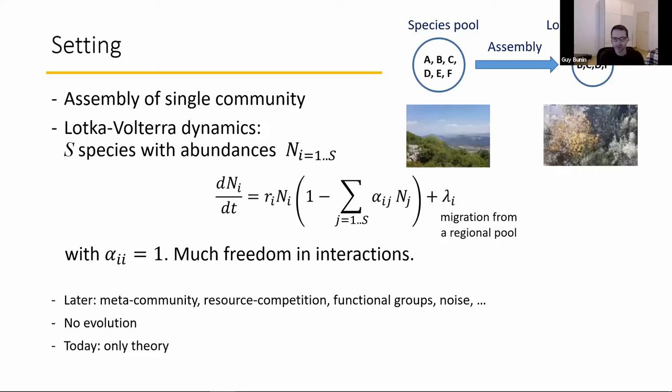N subscript i, with subscripts from one to S, the number of species in the pool. These are just the usual Lotka-Volterra dynamics with migration from a regional species pool. Even in the simplest of models, the matrix alpha, the network of interactions, has tons of numbers in it.